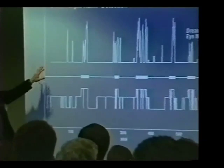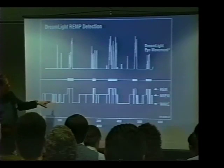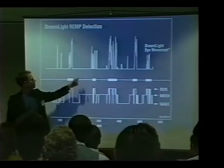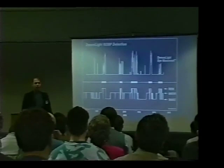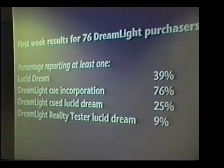This shows the output of the Dreamlight where we're detecting three different stages of sleep: wakefulness, non-REM sleep, and REM sleep. These mark the REM periods, and here you're seeing the output. You can see that the Dreamlight actually does a pretty good job of detecting REM and then flashing the lights.